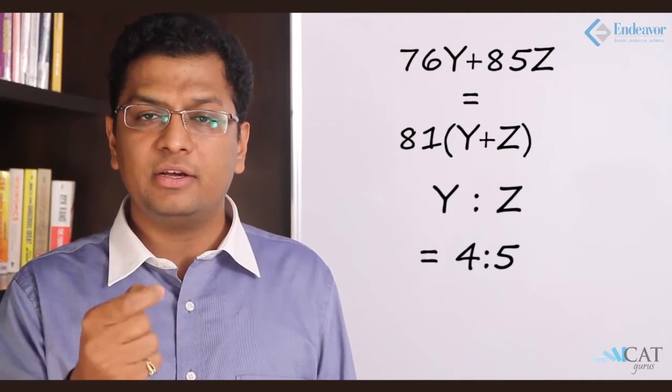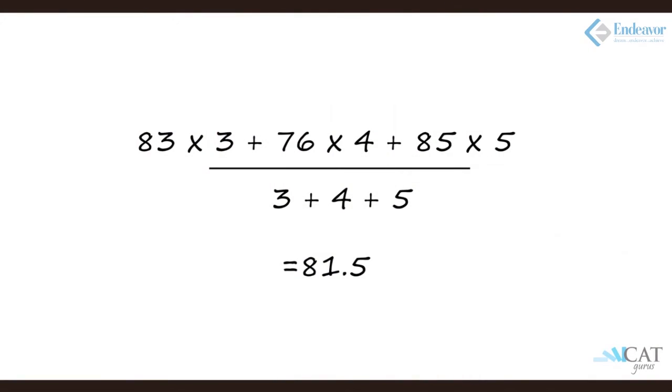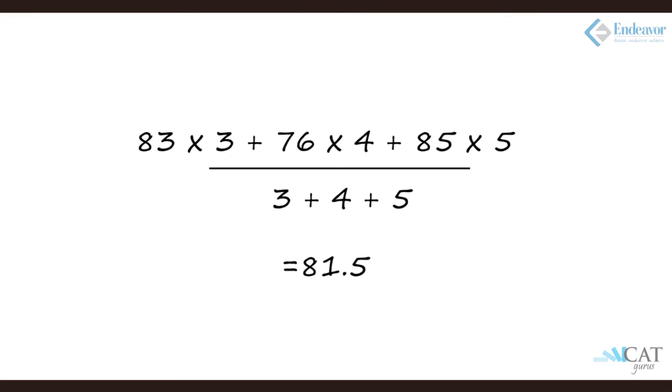We have a ratio of x:y and y:z, and fortunately the middle number, which is y here, is also the same, which is 4. So we can have a continuous ratio of 3:4:5. Now let us put it into the weighted average equation: (83×3 + 76×4 + 85×5) divided by (3+4+5) gives us 81.5. So this is the overall average of the three classes.